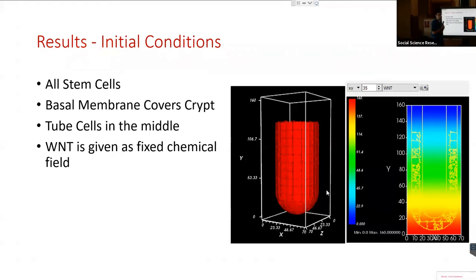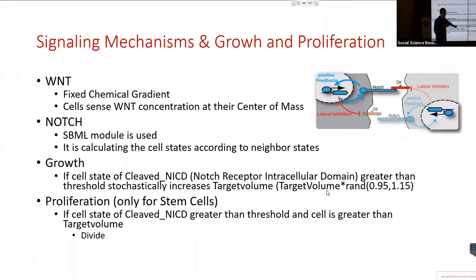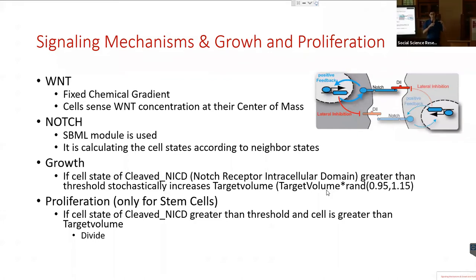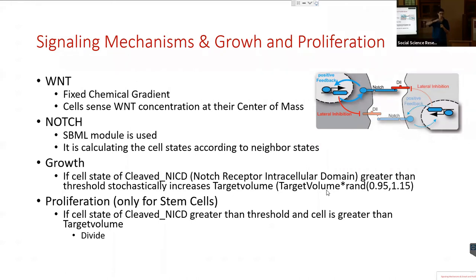In the beginning, there is stochasticity as only four types of cells grow. The cells are covered by the basal membrane. They go upward and are flushed away when they touch the top of the crypt. The tube cells make a constraint in the crypt, the basal membrane covers the bottom and sides, and there is nothing at the top, so cells go up and die when they touch.